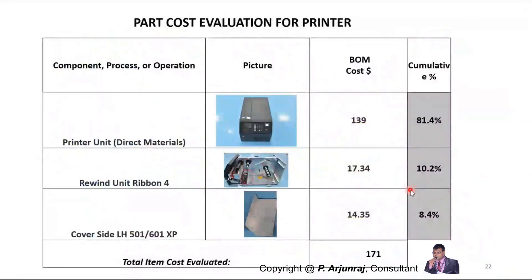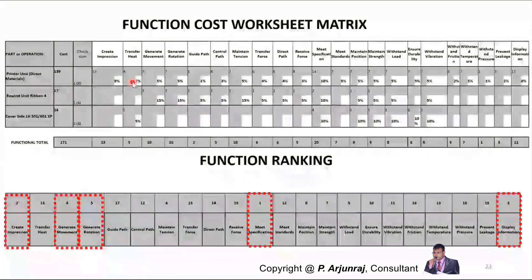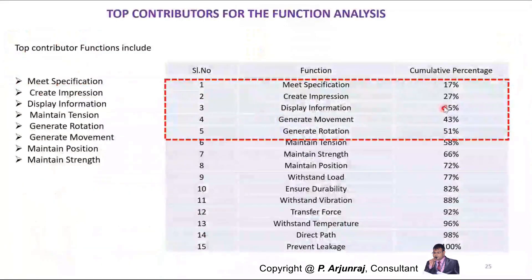Now, that is the same thing we have seen previously. I am going to have some block media here — I have identified only three IDs, which represent the inside parts of the printer. I put them randomly for explanation purposes. We are going to put all the functions and rank them. Out of 15 functions, I have identified the top five. Based on the Pareto principle, the top five functions are contributing only 50% of the cost — it is not contributing 80% of the cost. So Pareto may not be accurate here.